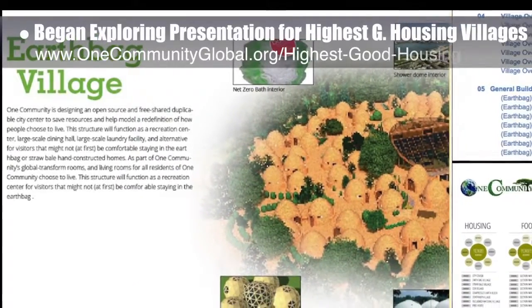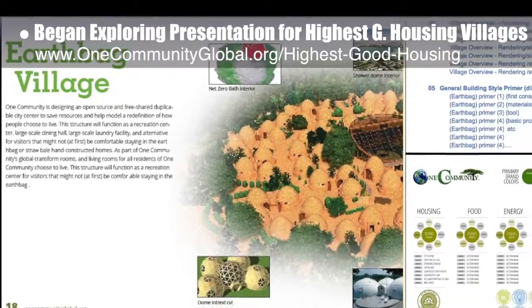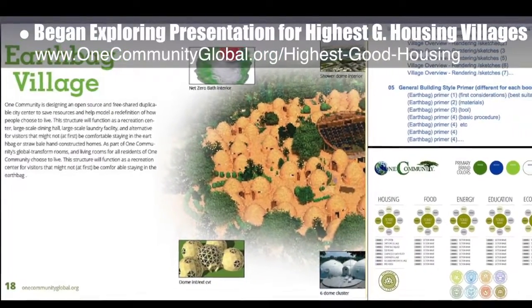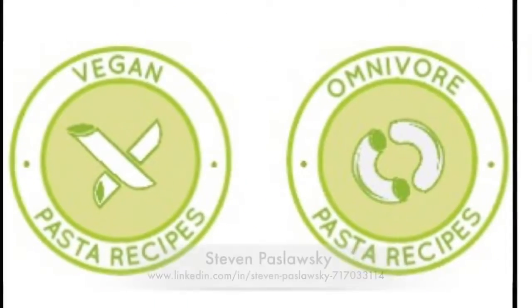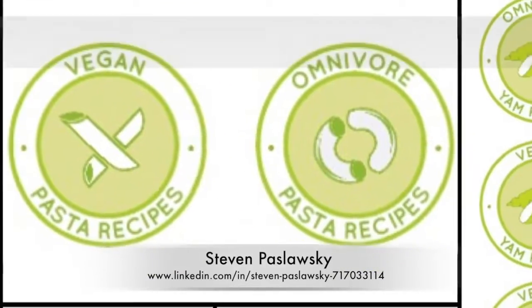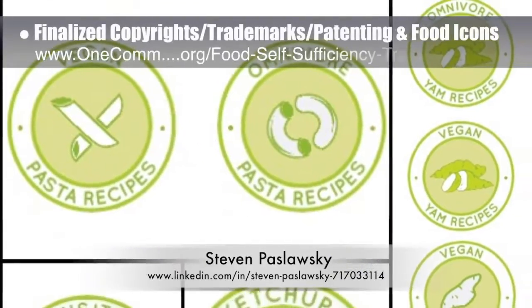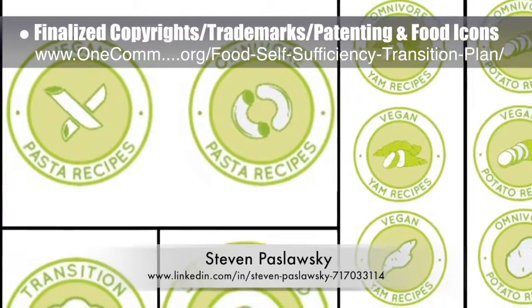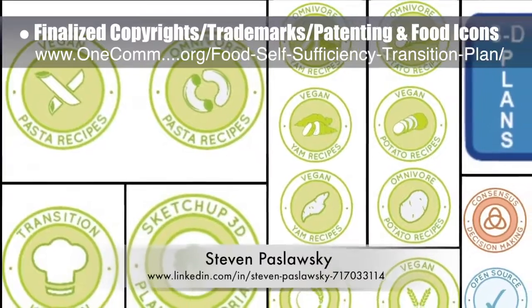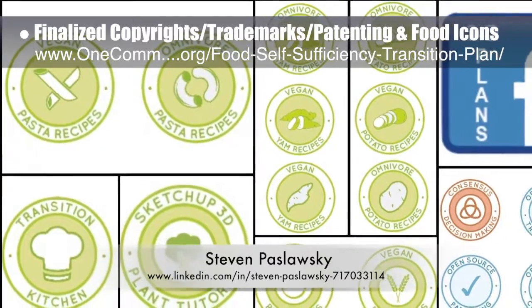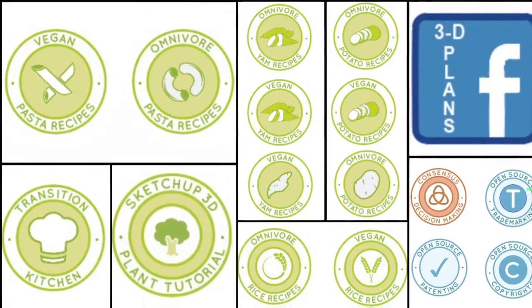This week the core team began exploring how to create an open source and standardized presentation for highest good housing villages, shown here along with a color guide wireframe. Graphic designer Steven Poslowski finalized icons for our open source copyrights, trademarks, and patenting pages, the food self-sufficiency plan page, and fixed the last icon needed from the social media set.